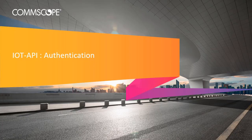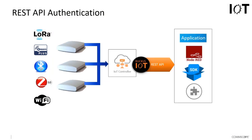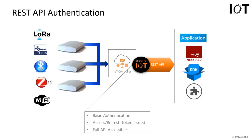The first thing to look at from an authentication perspective is the architecture. We have our devices out on the edge using various IoT protocols, connecting in through our gateways and into our IoT controller. The northbound interface connects the IoT controller to the application space — whether it's a built-in or customer-defined application, Node-RED flows integrated within the controller, an SDK, or a third-party plugin. In all cases the application space needs to be connected and authenticated with the IoT controller.